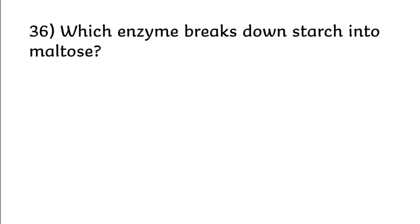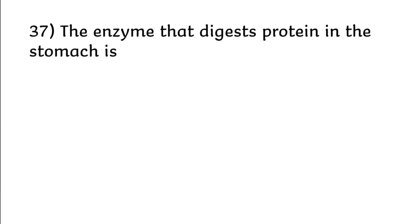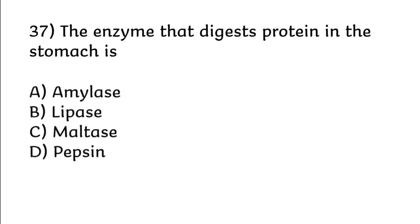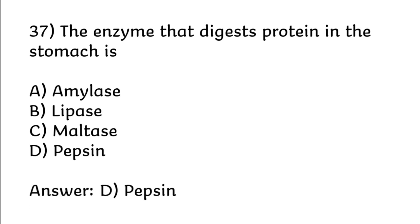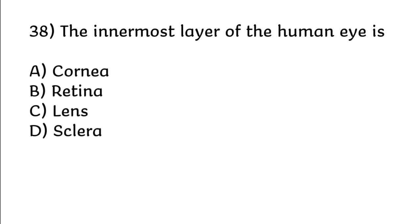Which enzyme breaks down starch into maltose? Options: amylase, lipase, pepsin, trypsin. Correct answer is option A: amylase. The innermost layer of the human eye is: cornea, retina, lens, sclera. Correct answer is option B: retina.